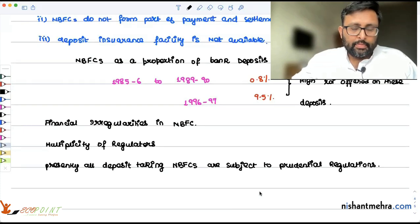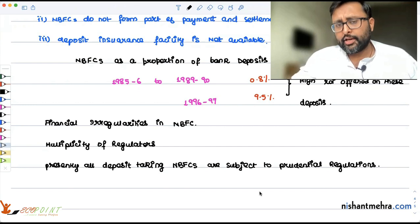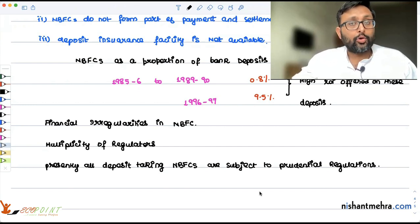They give an example. CHIT funds are also NBFCs, they are governed by the states. Mutual benefit companies are also NBFCs, they are governed by Ministry of Corporate Affairs. Housing finance companies are governed by National Housing Bank. Because of multiplicity of regulators also, it becomes difficult for them to function. But there has been some cleaning up in the NBFC sector also.